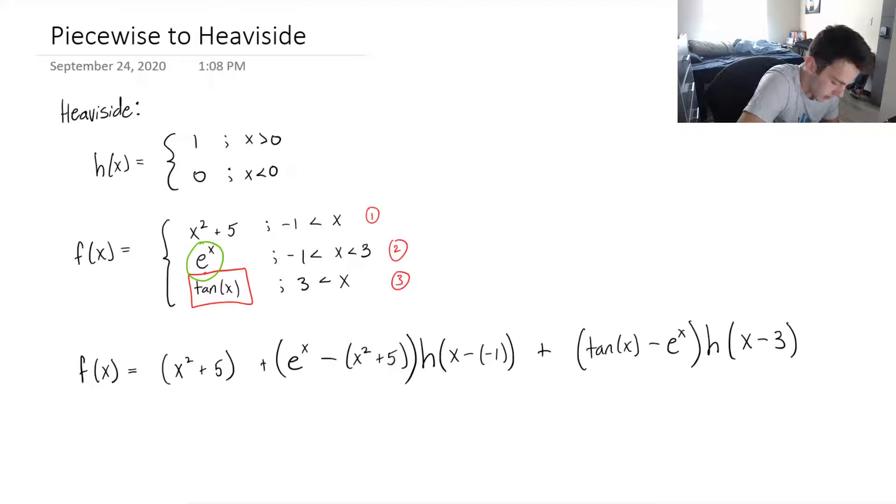So now let's just write this out: x squared plus five, plus this will be e to the x minus x squared minus five, times the Heaviside of x plus one, plus tan of x minus e to the x, times h of x minus three.